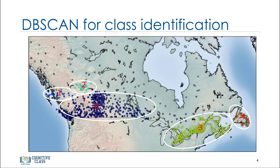As you can see, it not only finds different arbitrary shaped clusters, it can find the denser part of data-centered samples by ignoring less dense areas or noises. Now, let's look at this clustering algorithm to see how it works.